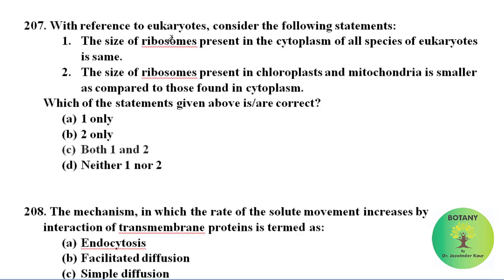With reference to eukaryotes, consider the following statements: the size of ribosome present in the cytoplasm of all species of eukaryotes is the same. The size of ribosome present in chloroplast and mitochondria is smaller as compared to those found in cytoplasm. Both statements are correct. Correct answer is option C, both 1 and 2.